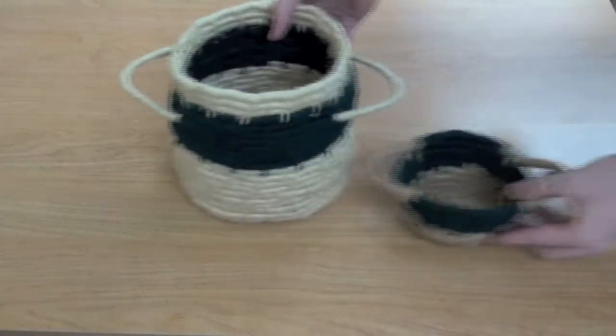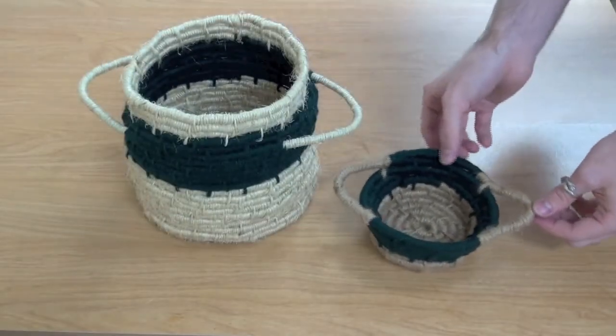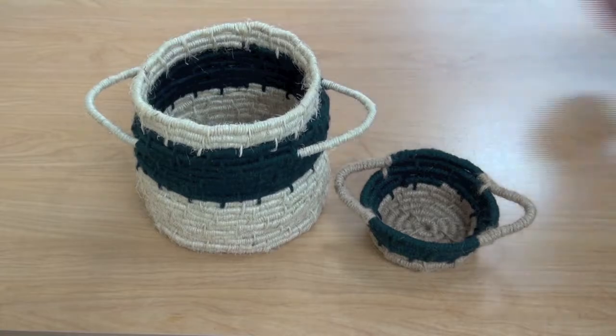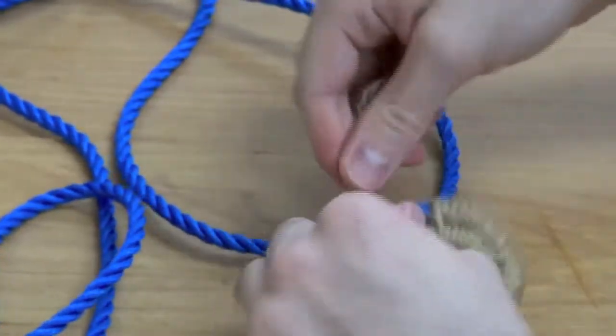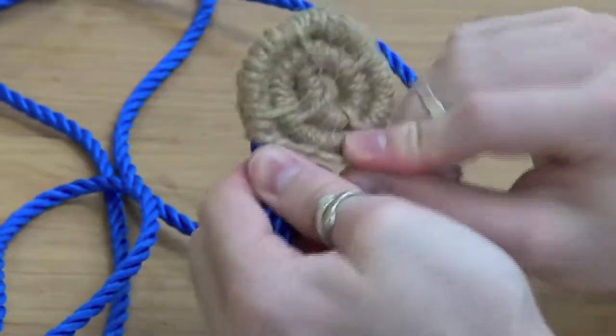Hello and welcome back to another how-to video with the Uxbridge Public Library. Today we will be showing you how to make coil baskets using a really easy weaving technique. These baskets are so easy and can be made anywhere and out of any rope-like material.